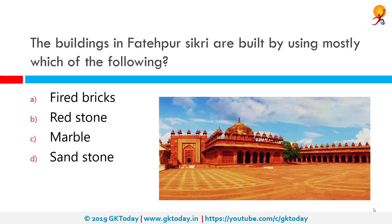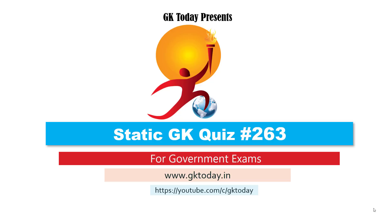The buildings in Fatehpur Sikri are built using mostly which of the following? The correct answer is redstone. Fatehpur Sikri is a small city in northern India just west of Agra, founded by a 16th century Mughal emperor. These buildings are mostly made of redstone, though there is some marble work in the facade. That's all for today's quiz — until the next video, goodbye!